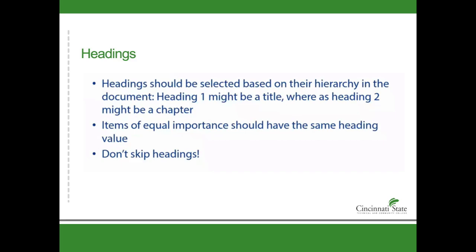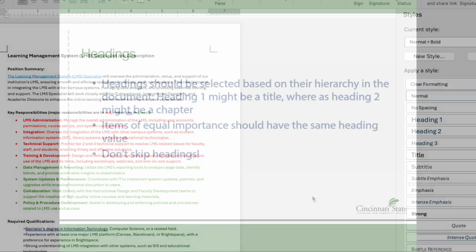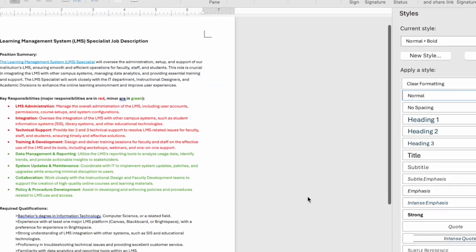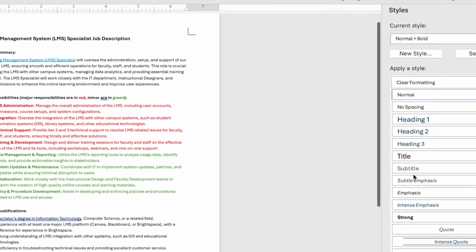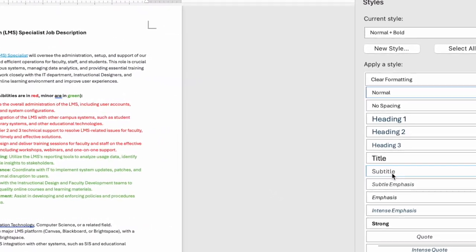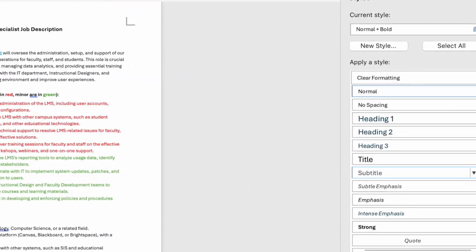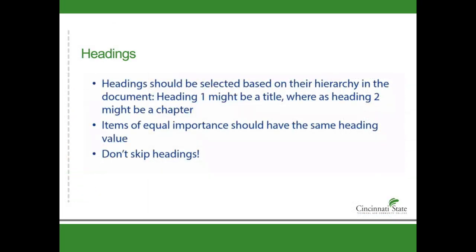To ensure accessibility when formatting documents in a word processor such as Word, it's important to use built-in features like headings, lists, and styles rather than manually adjusting text size or formatting. Later on in this presentation, I'll show you how you can do just that. Proper use of heading styles helps screen readers navigate the document.